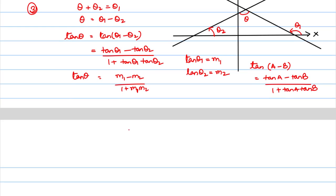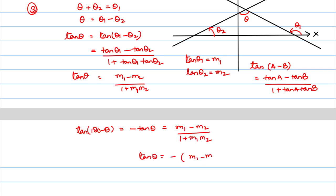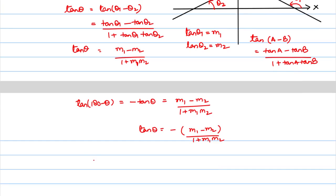As we have already discussed, instead of theta we can also use 180 minus theta, because 180 minus theta is also the angle between the two lines. But tan(180 minus theta) equals minus tan(theta). Therefore, tan(theta) can also be written as minus of m1 minus m2 upon 1 plus m1 m2. Whether it is m1 minus m2 upon 1 plus m1 m2 or minus times m1 minus m2 upon 1 plus m1 m2, both are acceptable. Combining both conditions, we can write tan(theta) equals mod of m1 minus m2 upon 1 plus m1 m2.